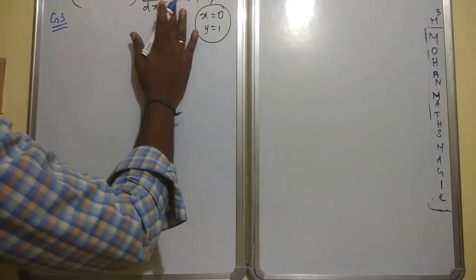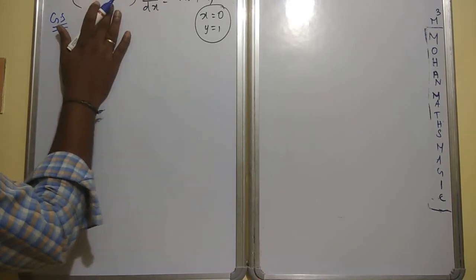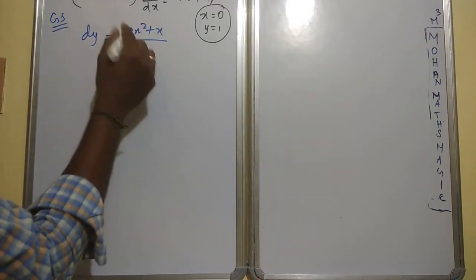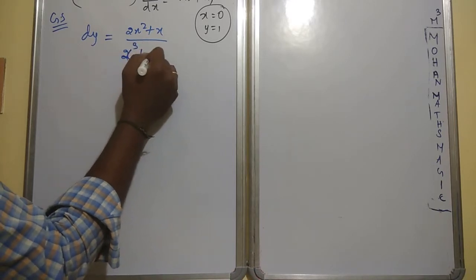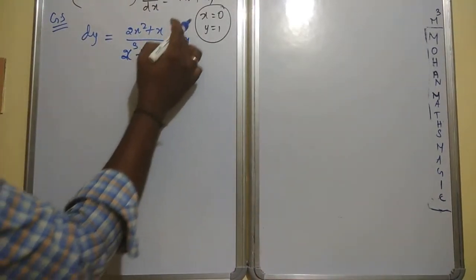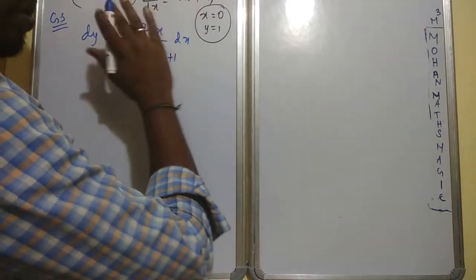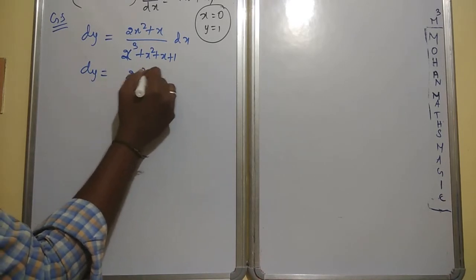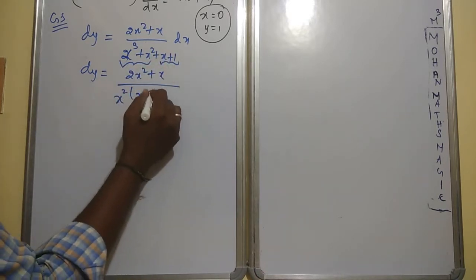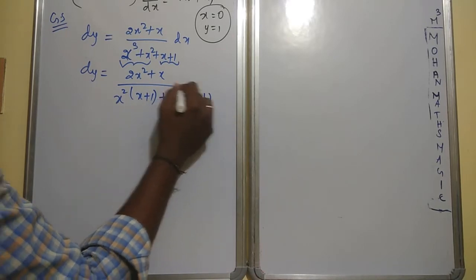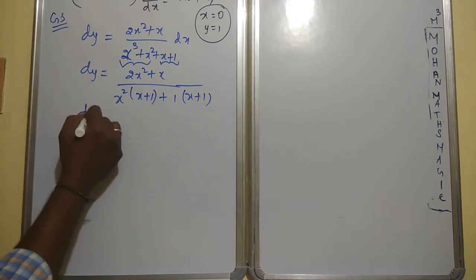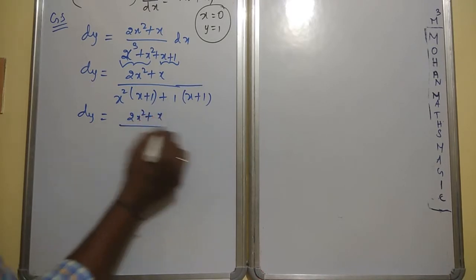Right side has no y terms, and left side has dy. So keep dy on the left side and move 2x² + x to the right side. The x³ + x² + x + 1 on the right side comes to the denominator upon cross multiplication. Now simplify further. Factorize: x² is common giving x²(x+1), and the remaining factor is also (x+1), so x² + x is the standard factored portion.